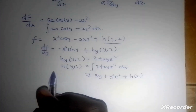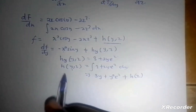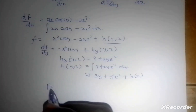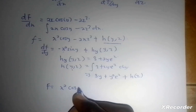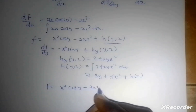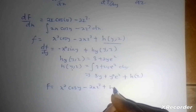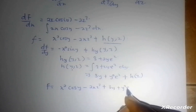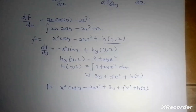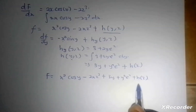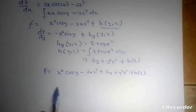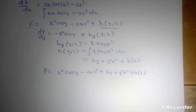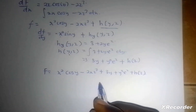I go back to the main potential function and I'm going to get: f equals x squared cos(y) minus 2xz cubed plus 3y plus y squared·e^z plus h(z). Now I'm still not done — I still have to find h(z) before I complete my potential function. So I'm simply going to differentiate this potential function with respect to z and compare it back to my gradient vector field.